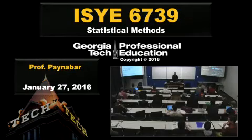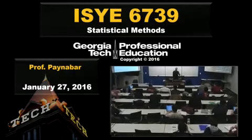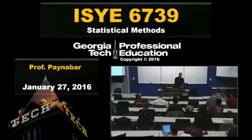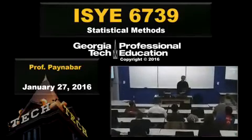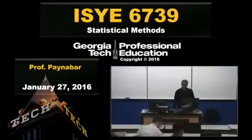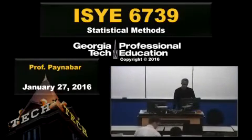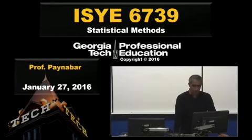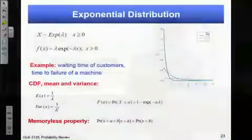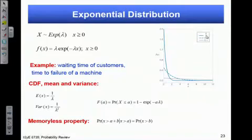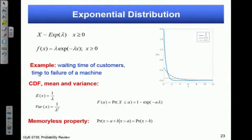Good afternoon, everybody. So, a quick review of exponential distribution. It has one parameter, and the shape and scale of the distribution depends on the value of this parameter, which is called lambda, and it's used to model time to one event.